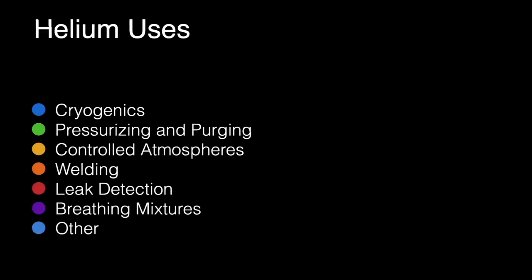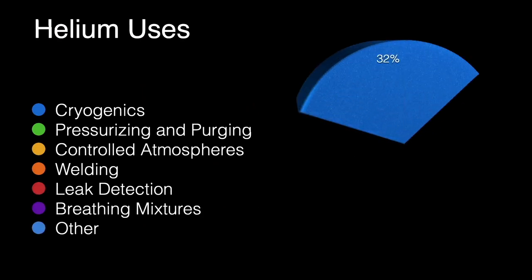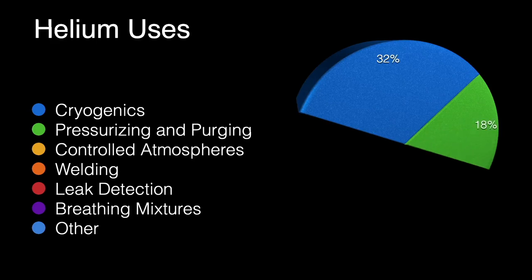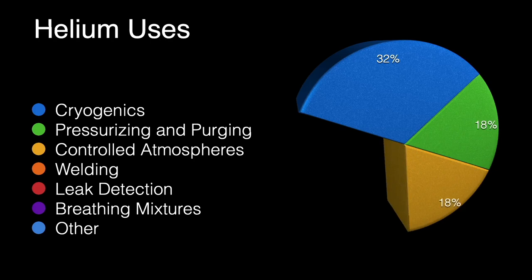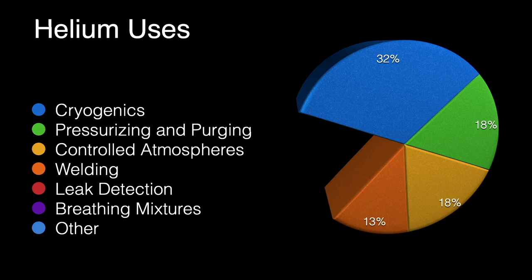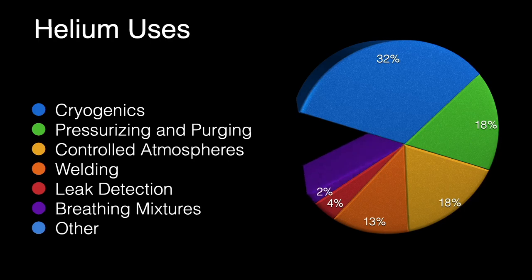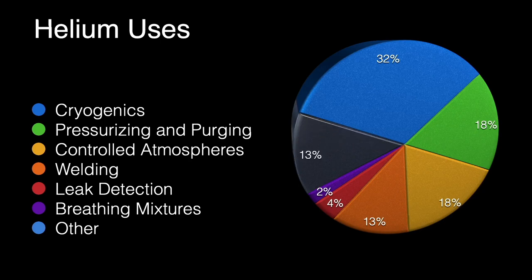So let's take a look at a few applications of helium. Helium has many uses that fall into broad categories. The biggest use is in cryogenics, making things very, very cold. 32% of helium is used for this. 18% is used for pressurizing and purging other gases. Another 18% is used for controlled atmospheres. 13% for welding. 4% for leak detection, since helium with its small atom is so good at escaping almost any containment, and 2% for breathing mixtures. All other applications account for the remaining 13%. Let's look at a few of these.